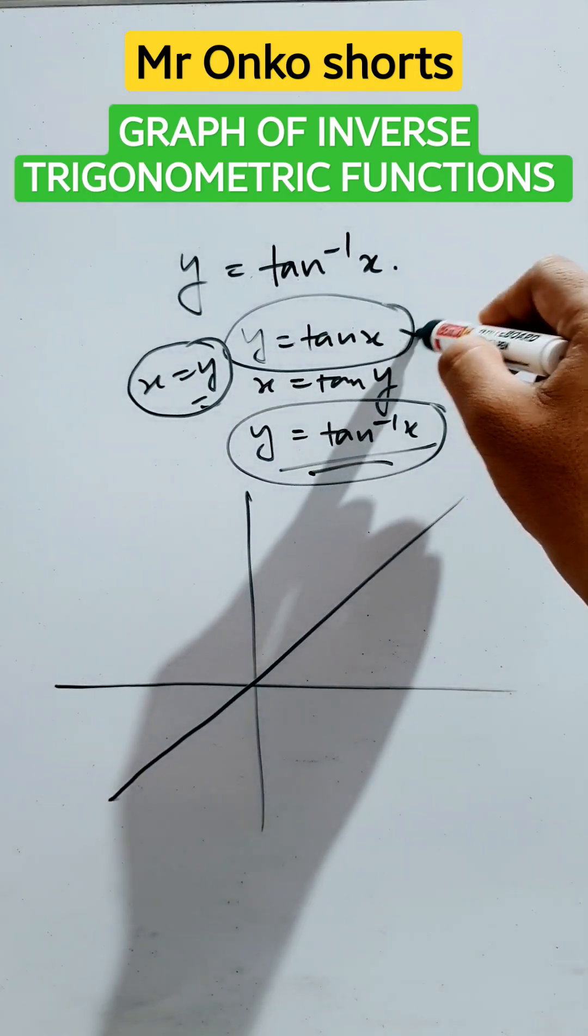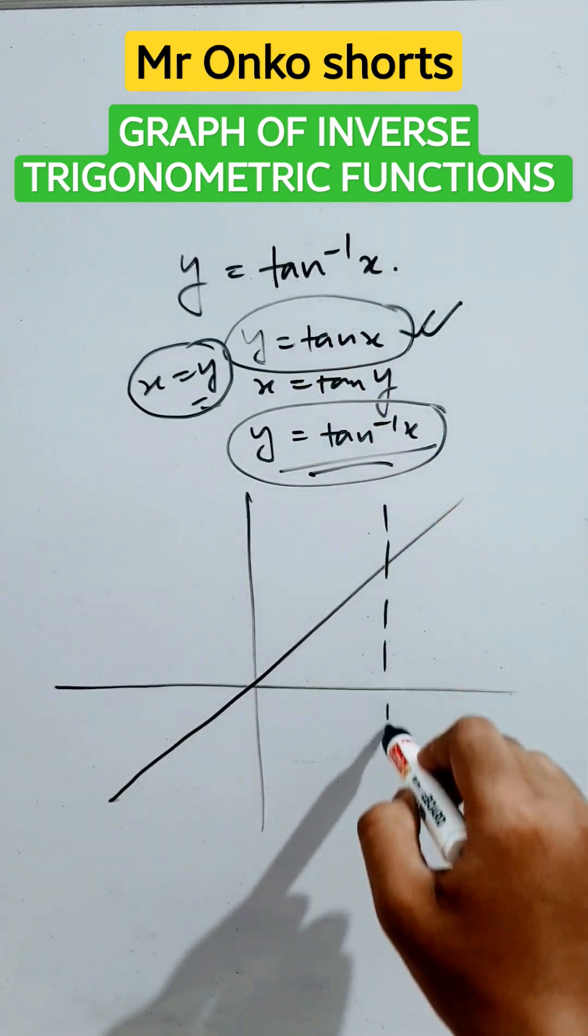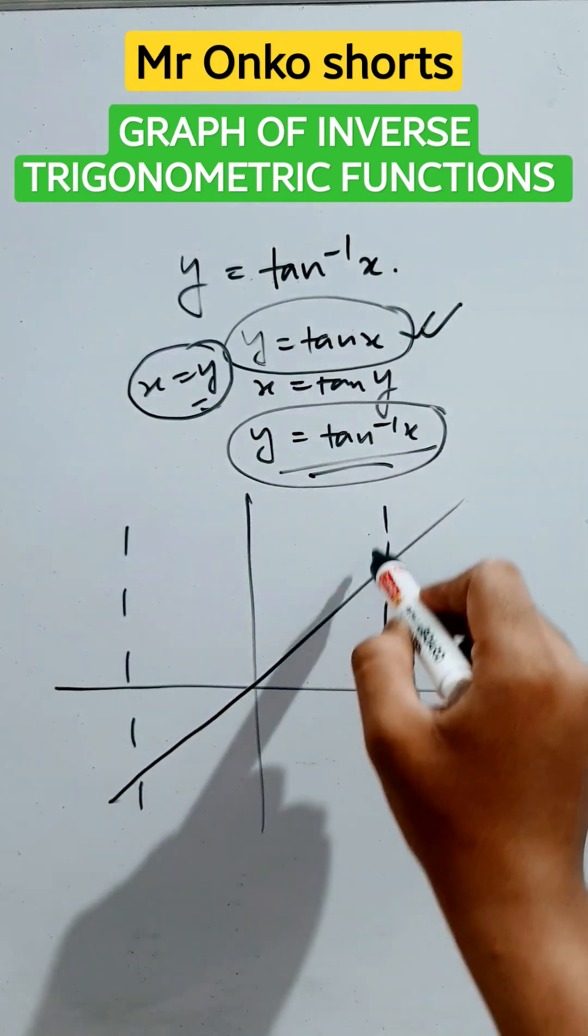Now, draw this curve y equals tan x. So it will be passing like this.